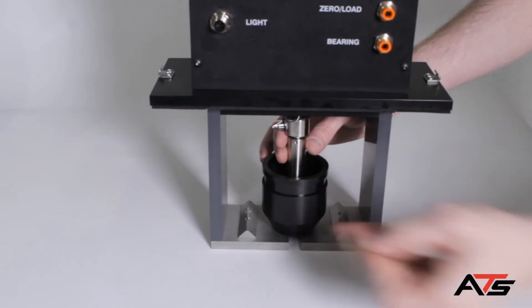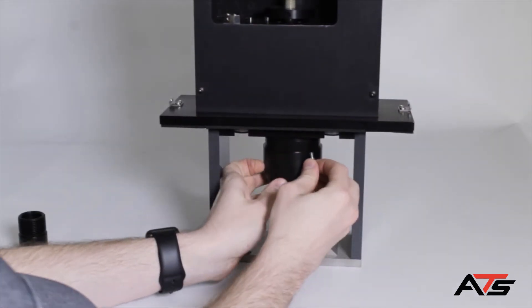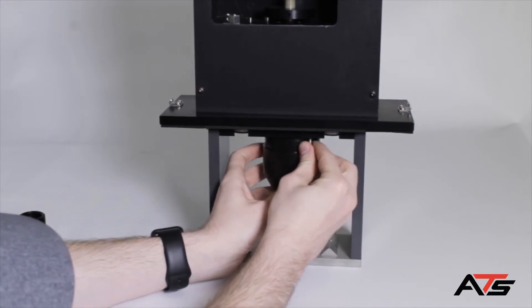Once the load nose is secured, lift the upper portion of the shroud around it. Use the back two screws to guide it into place before tightening them and carefully screwing in the front two screws.